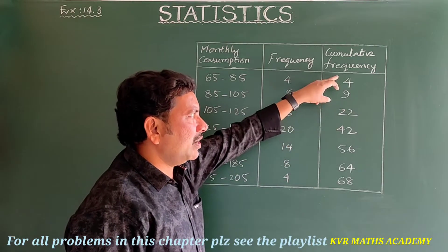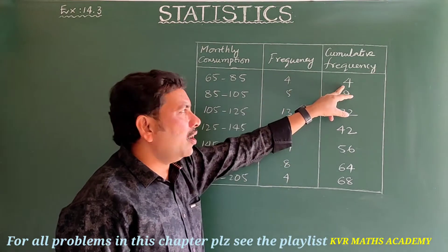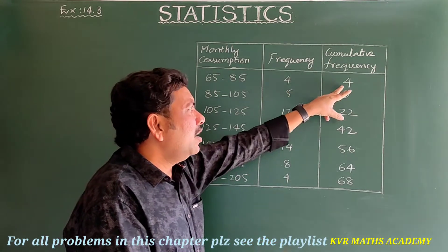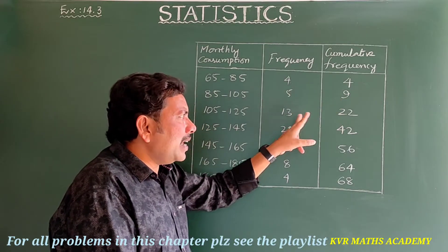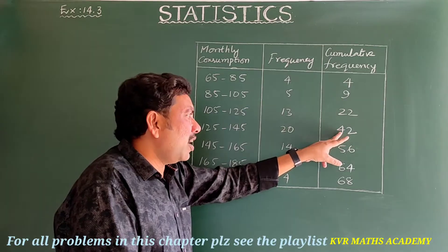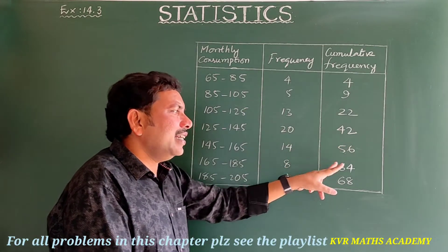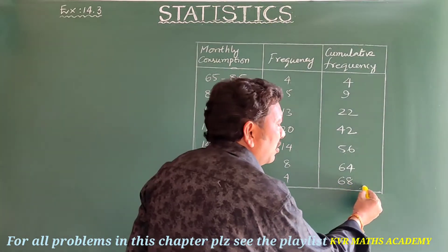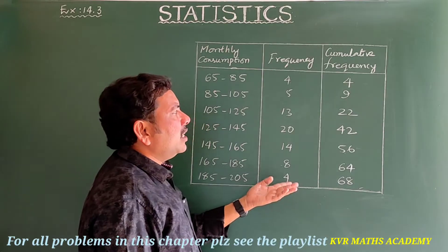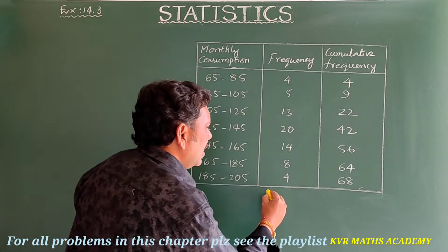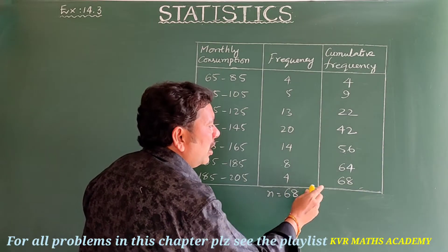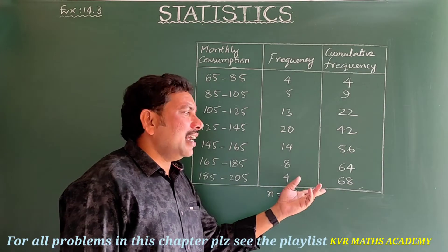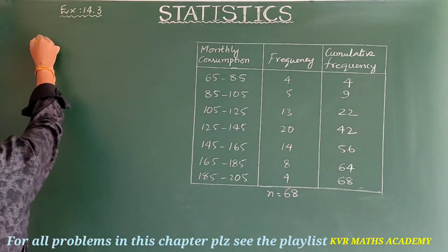The cumulative frequency is obtained by adding each frequency to the previous cumulative total: 4, 9, 22, 42, 56, 64, 68. The final cumulative frequency should equal the total number of frequencies, which is n = 68. We get 68 as the final cumulative frequency.